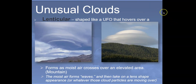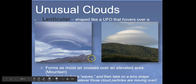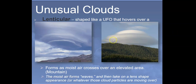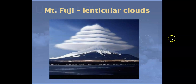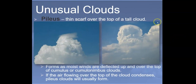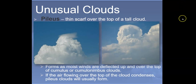Unusual clouds include lenticular clouds, shaped like UFOs that hover over the top of a mountain. They form as moisture crosses over elevated terrain — air ramps up, hits cooler air, condenses, and comes back down, leaving those weird layered lens-like clouds. Mount Fuji is notorious for creating lenticular clouds. Pileus clouds look like a thin scarf over the top of a tall cloud, forming as moist air is deflected up and over an existing cumulus or cumulonimbus cloud, leaving a trace of cloud at the tip.